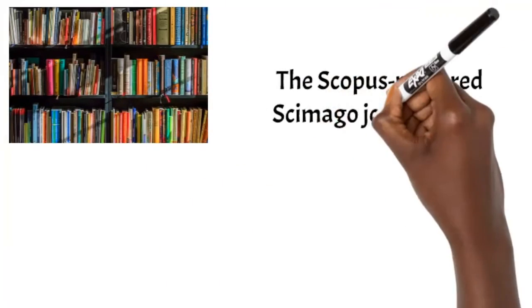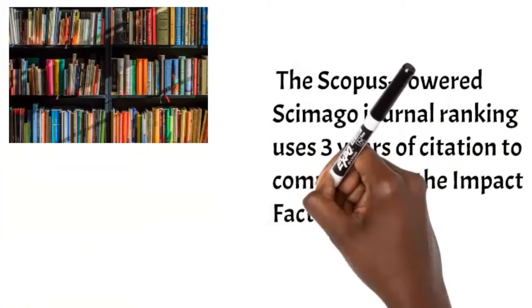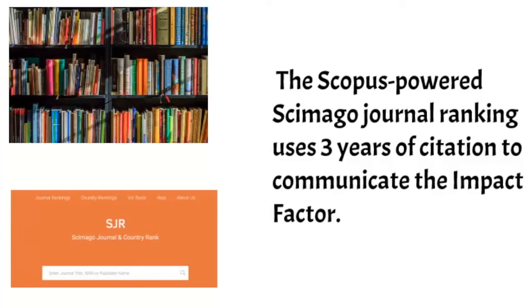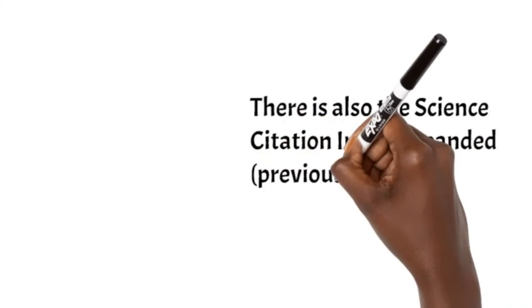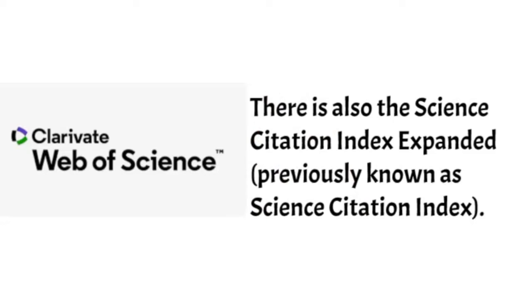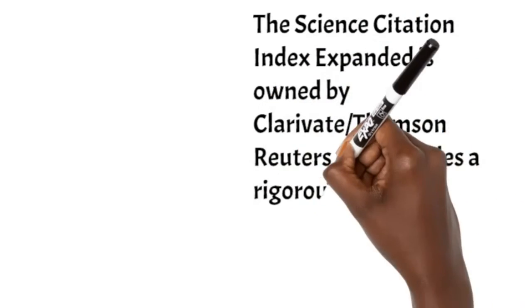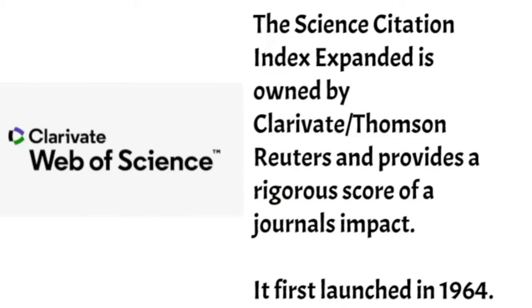The Scopus-powered Scimago Journal Ranking uses three years of citations to communicate the impact factor of a journal. There is also the Science Citation Index Expanded, previously known simply as the Science Citation Index. This ranking system is owned by Clarivate, which used to be the business arm of Thomson Reuters, and provides a rigorous score of a journal's impact. It first launched in 1964.